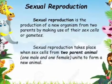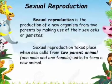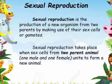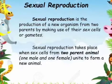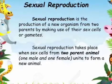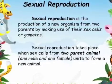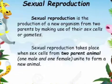Sexual reproduction takes place when sex cells from two parent animals, one male and one female, unite to form a new animal.